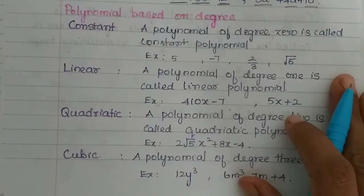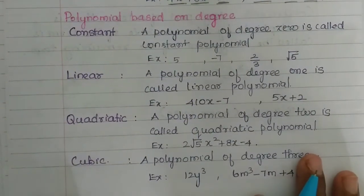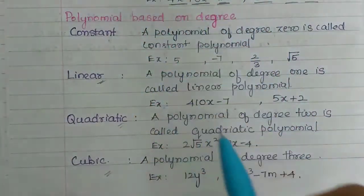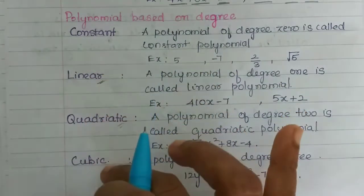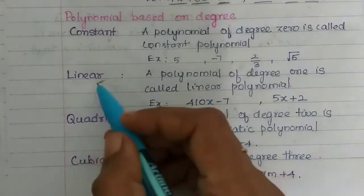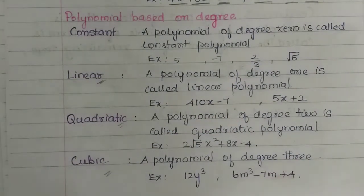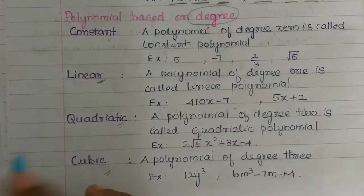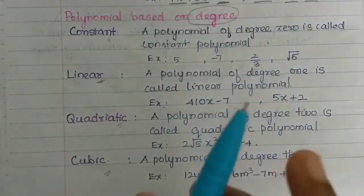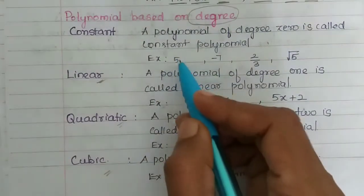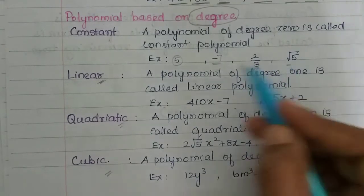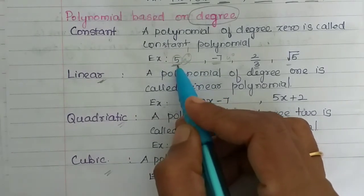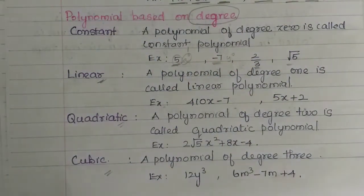Next is polynomial based on degree. If we look at polynomials based on degree, we name them accordingly. A constant polynomial has degree 0, because for a number like 5, the value of x is x to the power 0, which equals 1. So 5 equals 5 into 1.